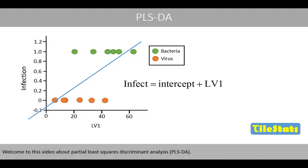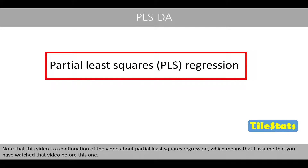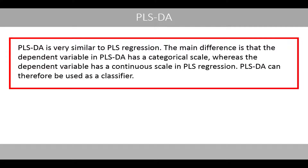Welcome to this video about partial least squares discriminant analysis. Note that this video is a continuation of the video about partial least squares regression, which means that I assume you have watched that video before this one. PLS discriminant analysis is very similar to PLS regression. The main difference is that the dependent variable in PLS discriminant analysis has a categorical scale, whereas the dependent variable has a continuous scale in PLS regression. PLS discriminant analysis can therefore be used as a classifier.